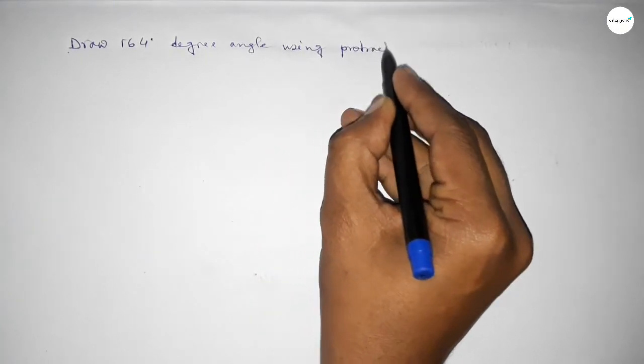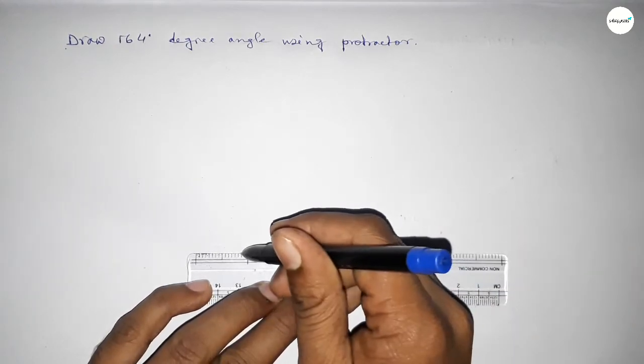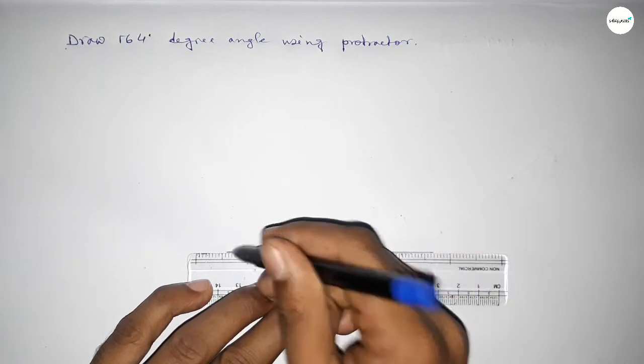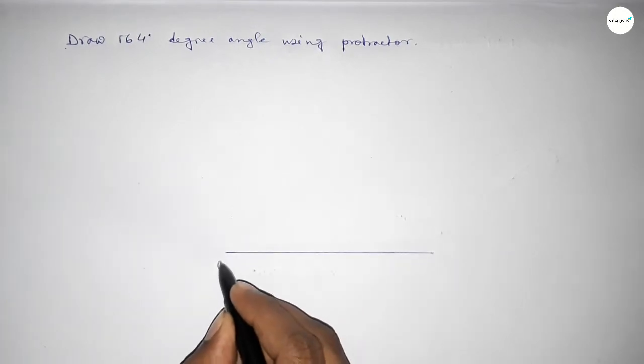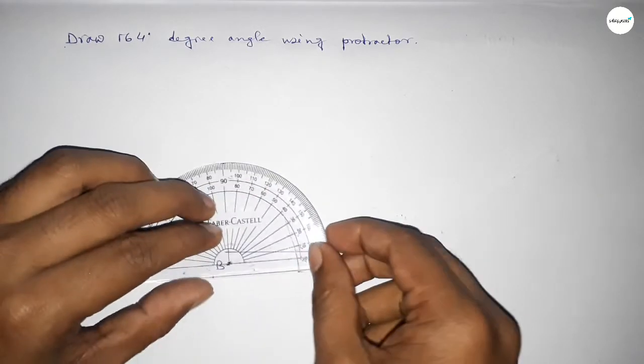So let's start the video. First of all, we have to draw here a straight line. First drawing here a line, next taking here point B and here point C. Now putting the protractor on point B perfectly.